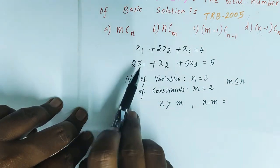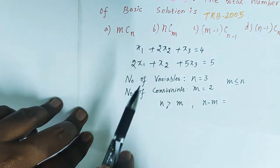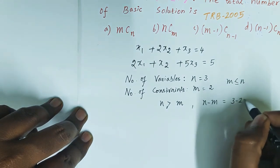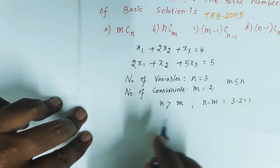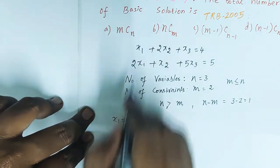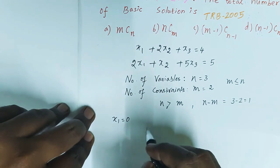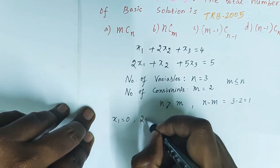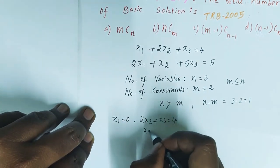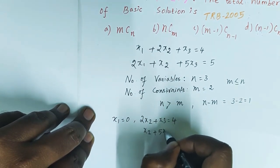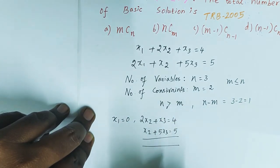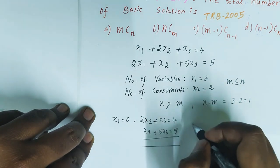With two constraints and three variables, n minus m is 3 minus 2 equals 1. First case: set x1 equal to 0. This gives us 2x2 plus x3 equals 4, and x2 plus 5x3 equals 5. Solving these two equations gives one basic solution.